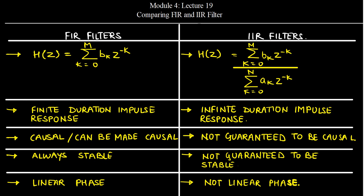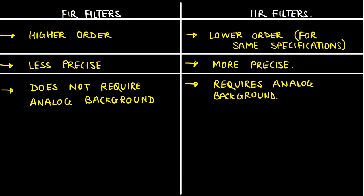FIR filters are always stable, but the stability of IIR filters is not guaranteed. We have linear phase characteristics in the case of FIR filters, which cannot be obtained for IIR filters. However, if given the same set of specifications, those specifications can be achieved at a very low order in the case of IIR filters. IIR filters are more precise compared to FIR filters, and FIR filter design does not require any analog background, whereas IIR filter design is completely dependent on analog background.